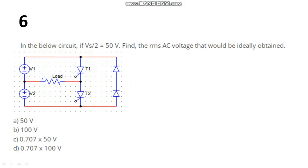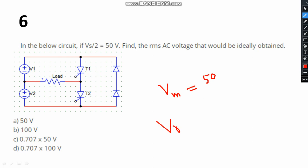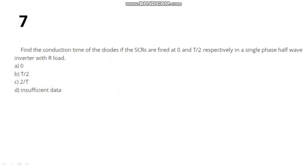Question number 6: in the circuit, Vs/2 = 50 volts. Find the RMS voltage ideally obtained. Since Vs/2 is the peak value, let Vm = 50 V. The RMS output voltage Vrms = Vm / √2 = 50 / √2. The right answer for this question is option C.